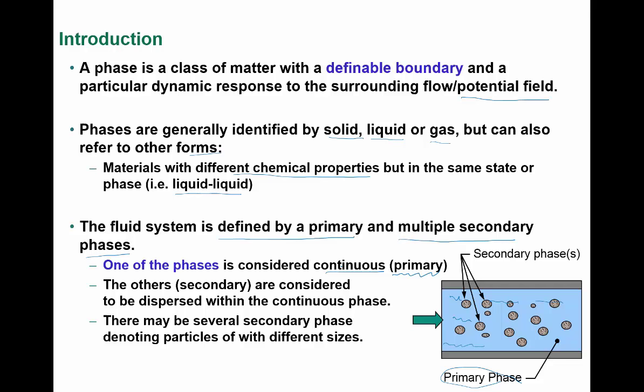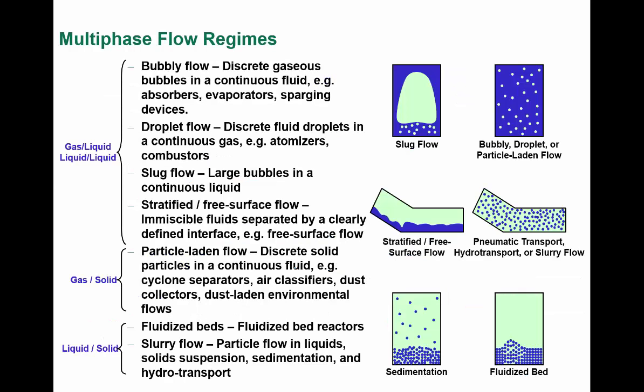The fluid system is defined by primary and multiple secondary phases. One phase is considered continuous — the primary phase — which is mostly continuous throughout the domain. The other type, secondary phases, are considered dispersed within the continuous phase, merged into the domain. There may be several secondary phases denoting particles of different sizes, and based on that the overall interactions will differ.